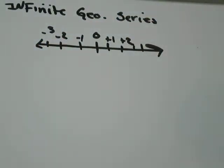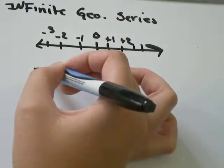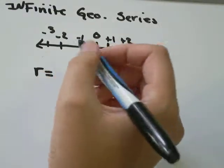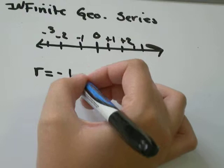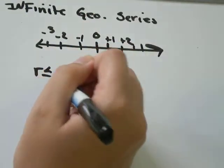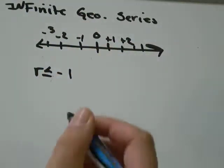So, geometric series, one of two things will happen. The series will go on forever, in which case you cannot find the sum. An example of a series that goes on forever will be one where the common ratio is more negative than negative 1. So it could be negative 2, for example.